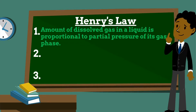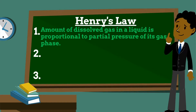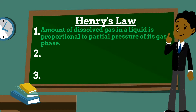Henry's law is a gas law that was formulated by the British chemist William Henry in 1803. The law states that at a constant temperature, the amount of dissolved gas in a volume of a specified liquid is directly proportional to the partial pressure of the gas in equilibrium with the liquid. In other words, the amount of dissolved gas is directly proportional to the partial pressure of its gas phase.